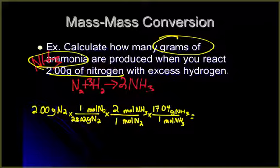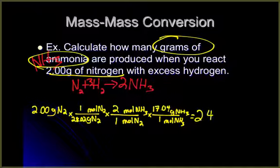So again, we end up with grams of NH3 on the top of our last step, which tells us that we did this correctly. Now you go through and plug it in and solve algebraically. So multiply across the top, divide by the bottom. So two times two times 17.04 divided by 28.02. Using significant figures, I need three significant figures: 2.43 grams of NH3.